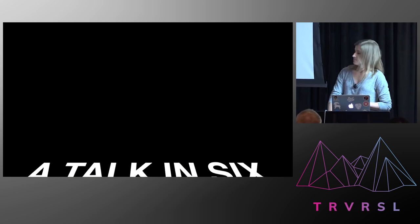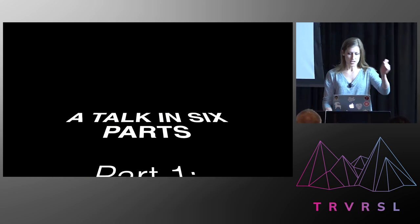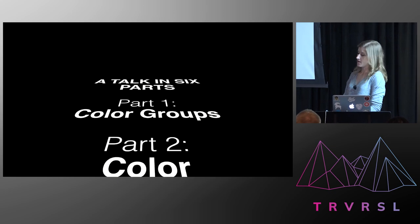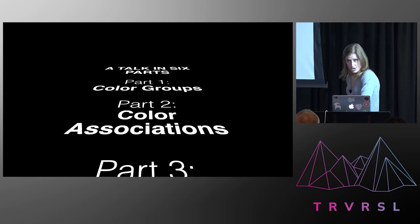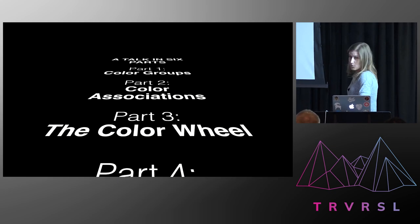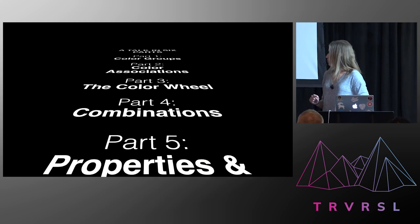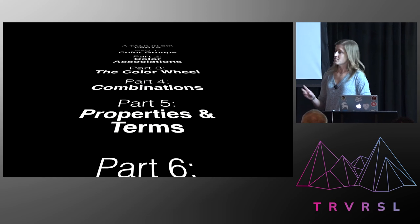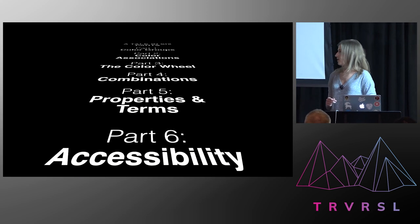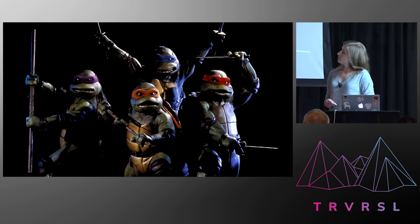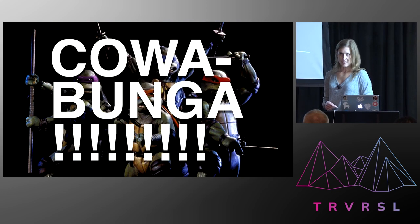This talk is in six parts. We are going to talk about color groups, color associations, the color wheel, color combinations, color properties and terms, and we'll talk about accessibility just a little bit because it's important. So let's do this.